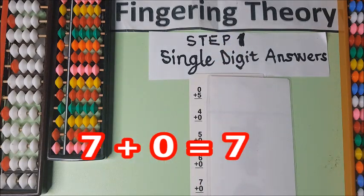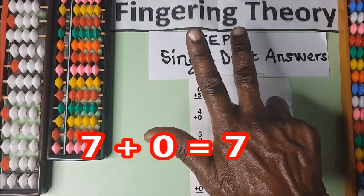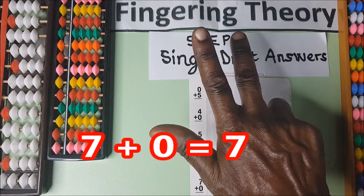Now we have seven plus zero. Seven plus zero. We have five, six, seven. Seven plus zero is the same seven.